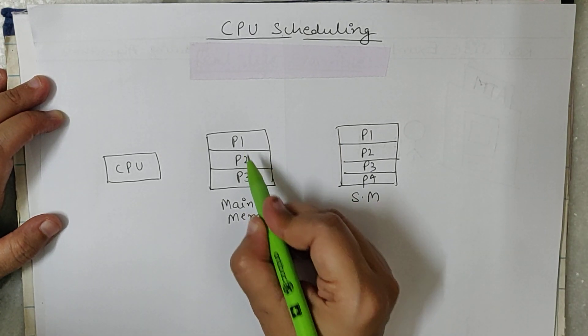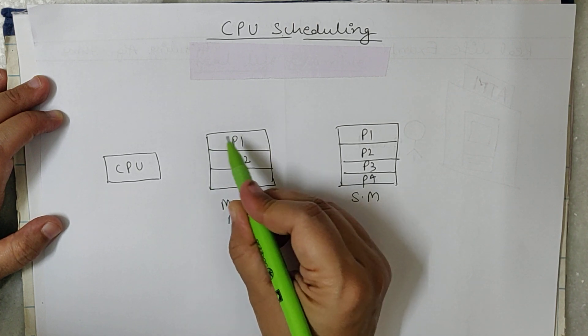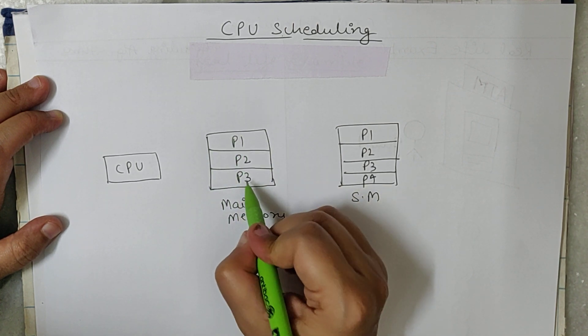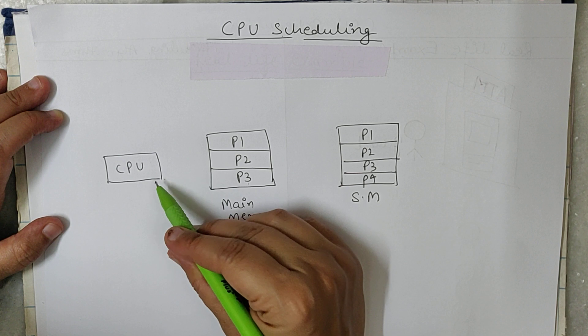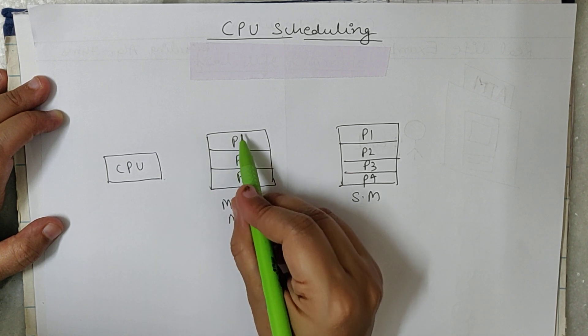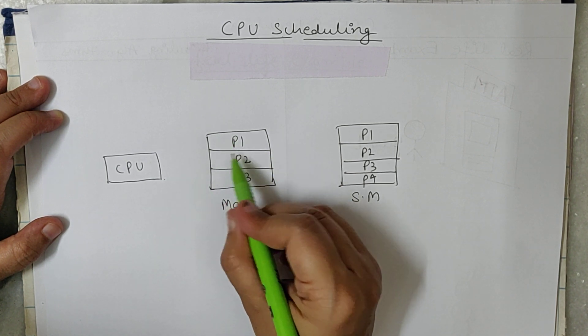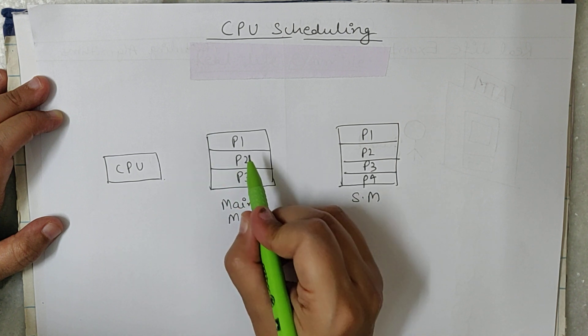So P1, P2, P3 are residing in the main memory and they all want the CPU. But since the CPU is only one, only one process at a time will get the CPU.